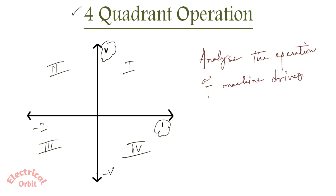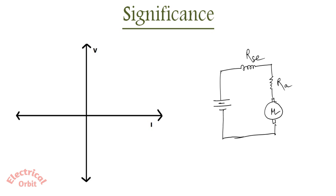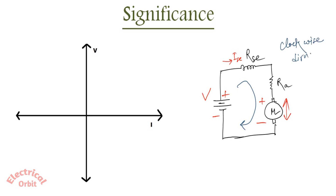Now if you try to analyze the operation of machine drives, this four-quadrant operation is very important. If we try to correlate a simple DC series model with this four-quadrant operation: this is the supply voltage V, this will be the current I_A or R_A. If our supply voltage polarity is plus and minus, we will find the voltage across this motor drive has the polarity plus and minus, and the current flowing through these drives is in the clockwise direction. So the current is entering at the plus terminal of the motor and coming out from the negative terminal.